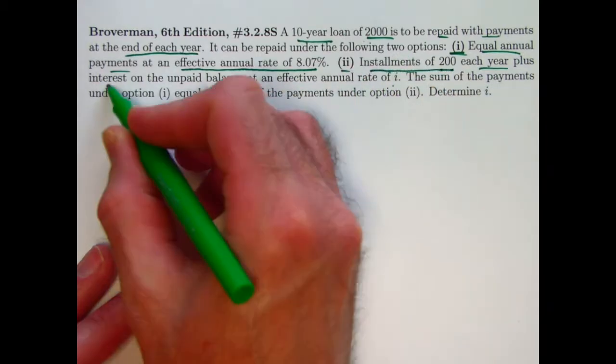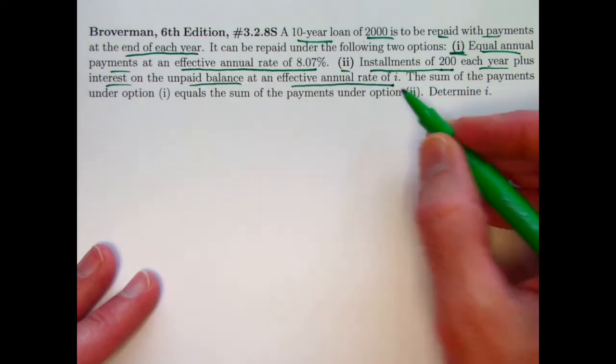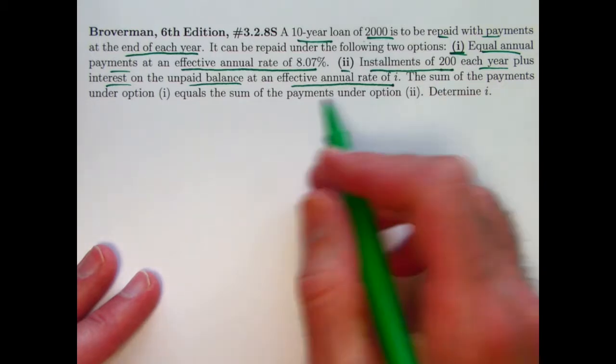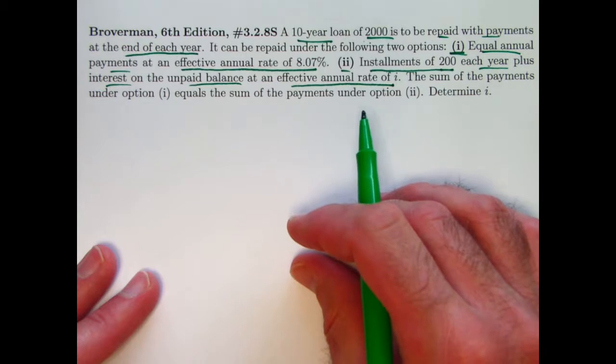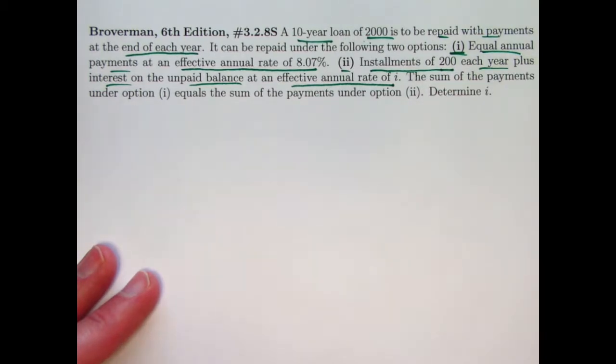Option two: installments of $200 each year plus interest on the unpaid balance at an effective annual interest rate of i. So the $200 goes toward reducing the principal every year. After one year the balance will go down to $1,800. After two years it'll go down to $1,600, $1,400, $1,200, etc. The interest paid goes down because your balance is going down, therefore your total payment is going down as well every year.